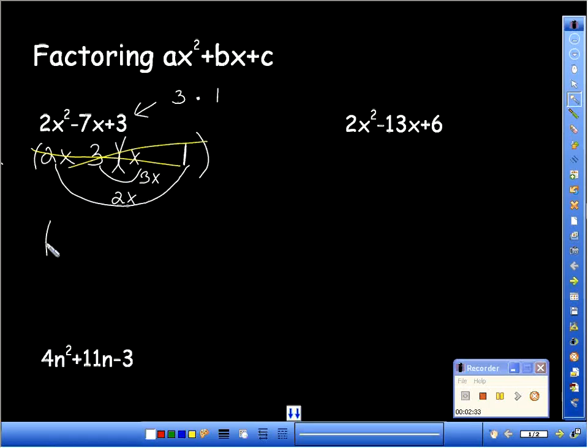So let's switch it around. 2x and x. What if I put the 1 here and the 3 here? Let's check. What do I get? 2x times 3? Say it louder. 6x and 1 times x? 1x. Can 1x and 6x equal 7? Yes. I need it to equal negative 7.